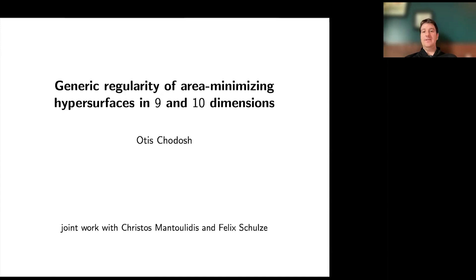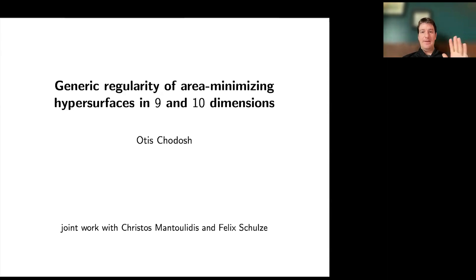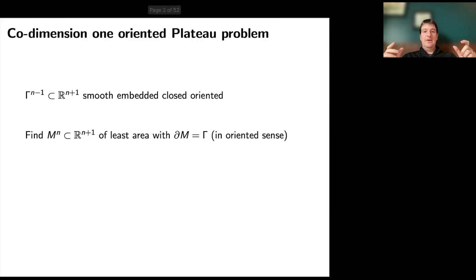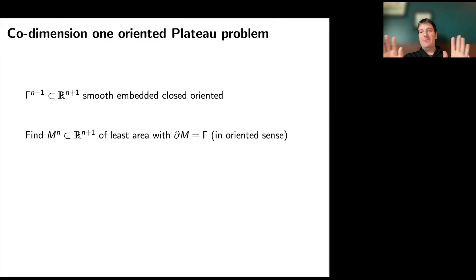Not the obstacle problem, but still an elliptic variational problem — the Plateau problem. Probably people here are familiar with that, but I'll remind you. Take a codimension-two smooth embedded closed oriented submanifold of Euclidean space — a curve in R³ with a given orientation. The Plateau problem asks to find a least-area hypersurface whose boundary is that curve. I'll always talk about the oriented problem: M has a given orientation and the boundary of M agrees with the orientation of gamma.